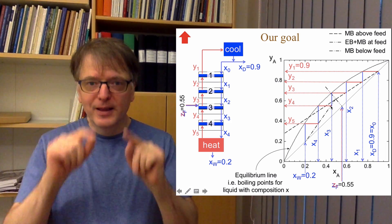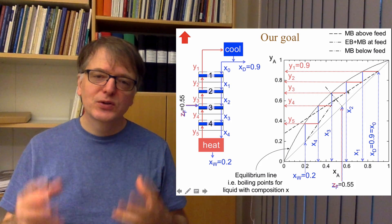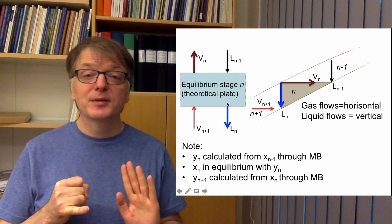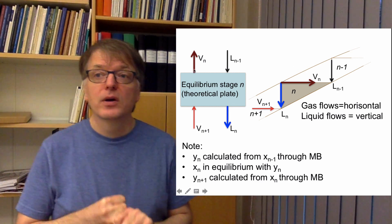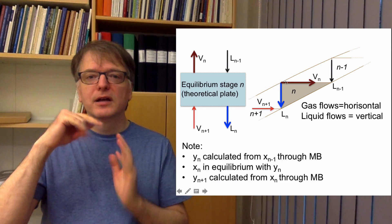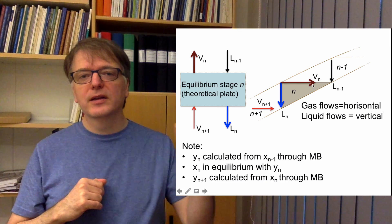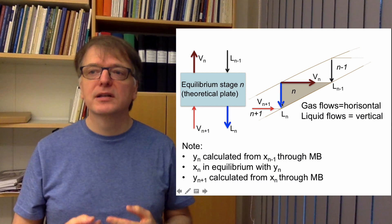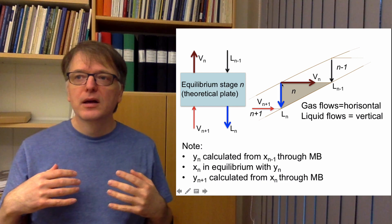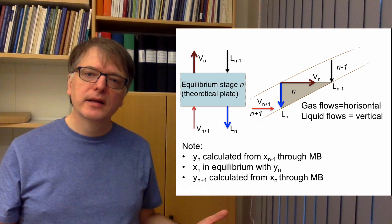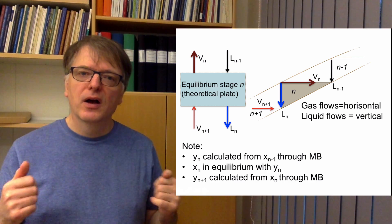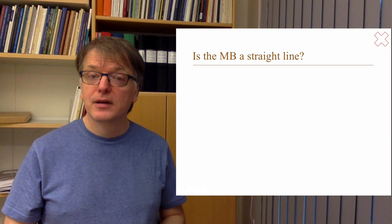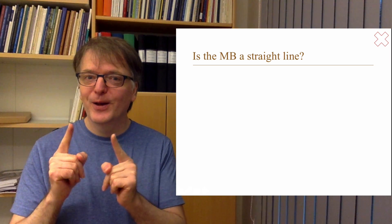Looking at the triangles drawn in more detail: the liquid flux leaving the equilibrium stage is in equilibrium with the vapor flux leaving, so there is a point on the equilibrium curve in the triangle. The horizontal line represents the vapor flow leaving that equilibrium stage, and the vertical line is the liquid flux leaving that layer. The mass balances are straight lines in the xy diagram if L divided by V is constant — and that is true when the evaporation enthalpy is independent of composition and there are no heat losses.